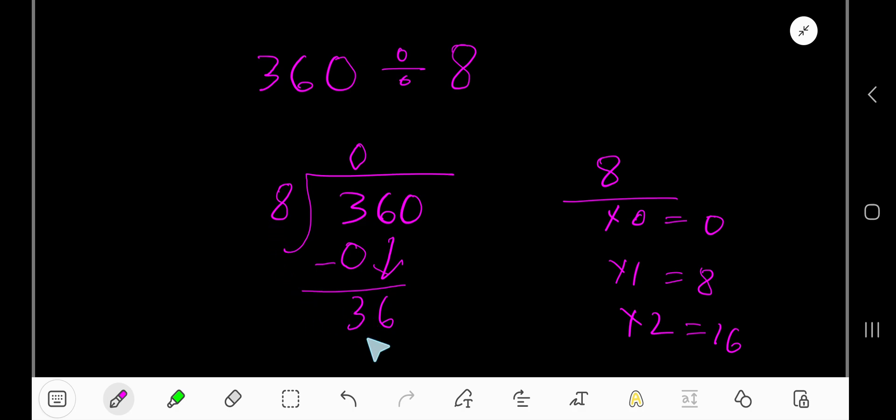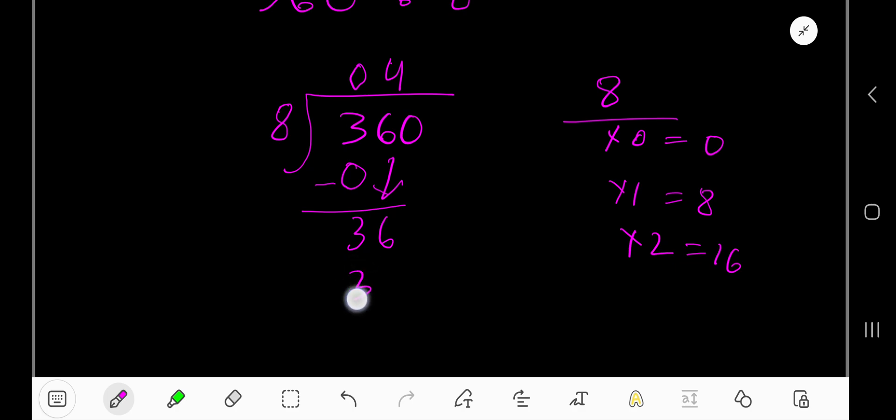It goes into 36 actually 4 times. 4 times 8 gives you 32. If you subtract, bring down the 0. 8 goes into 40 how many times?